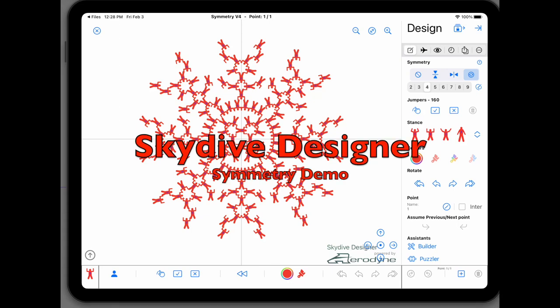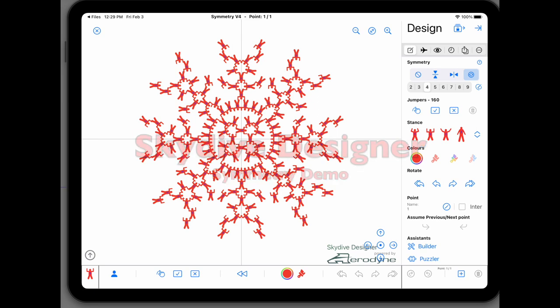I'm going to do a quick demo and use these symmetry controls to build this formation, which is the first point of the 150 wave tunnel break sequential that we attempted last October.